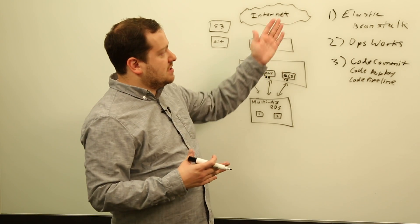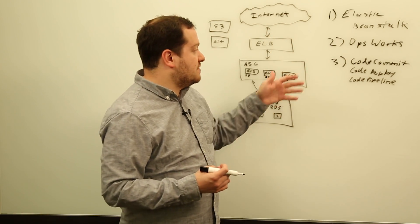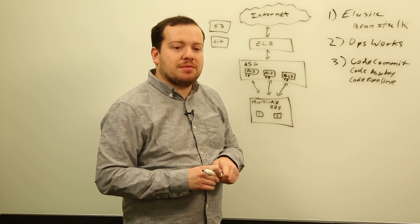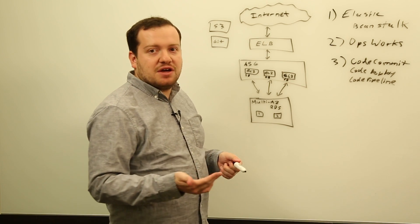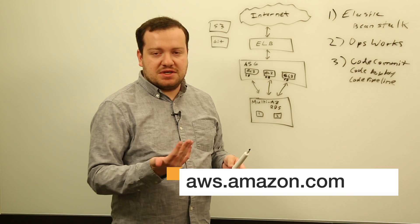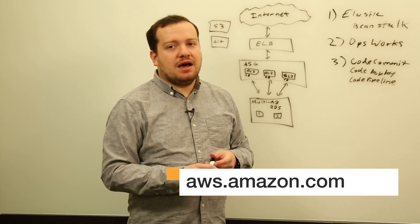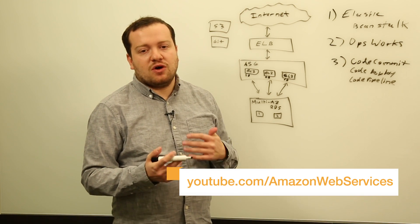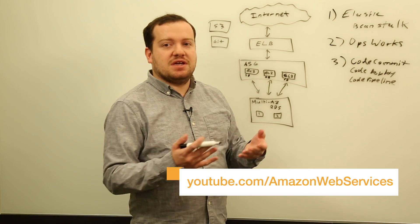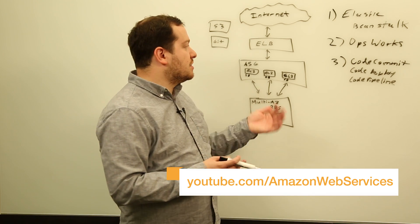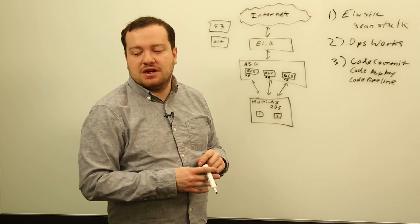So it's super flexible. These are the three options: Elastic Beanstalk, OpsWorks, and our code services, which are CodeCommit, CodeDeploy, and CodePipeline. And if you'd like to find out more, you should go to our website, which is aws.amazon.com. And you should also check out our YouTube channel, which has all of our videos from our summits and our reInvent conferences, including several deep dives on these services.